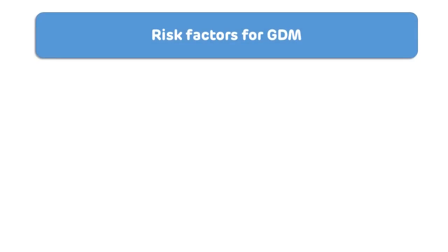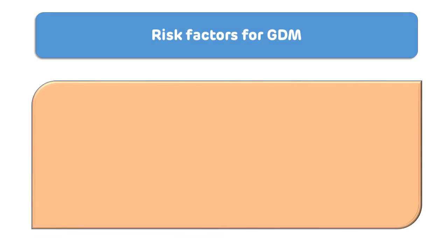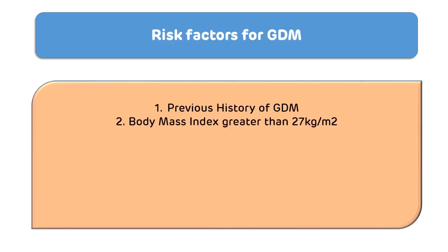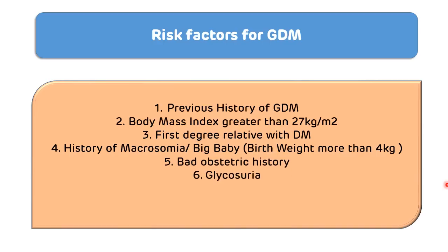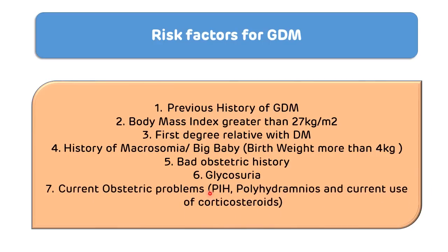The risk factors for gestational diabetes mellitus include: previous history of gestational diabetes mellitus; BMI more than 27 kg/m²; first-degree relative with diabetes mellitus; history of macrosomia or big baby with birth weight more than 4 kg; any previous bad obstetric history; glycosuria with glucose 2+ on at least two occasions; and current obstetric problems like pregnancy-induced hypertension, polyhydramnios, and current use of corticosteroids.